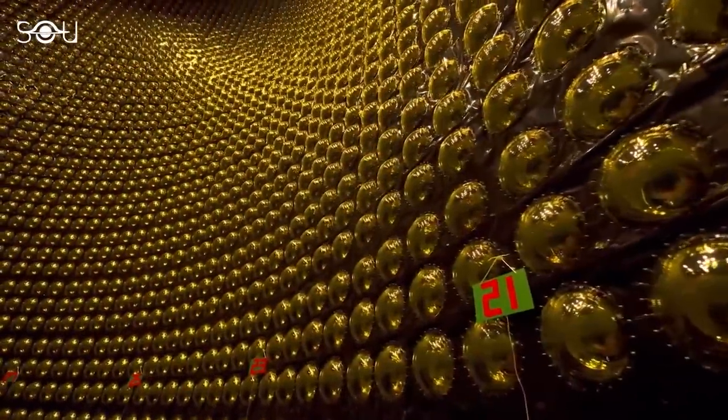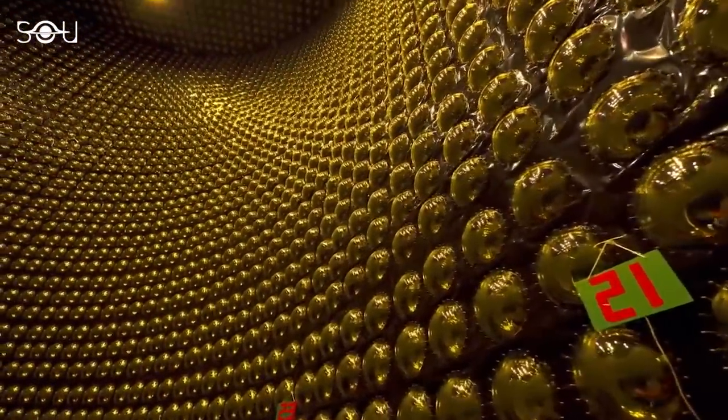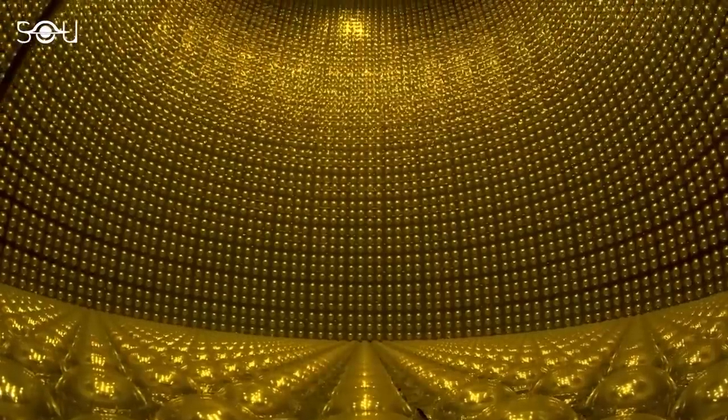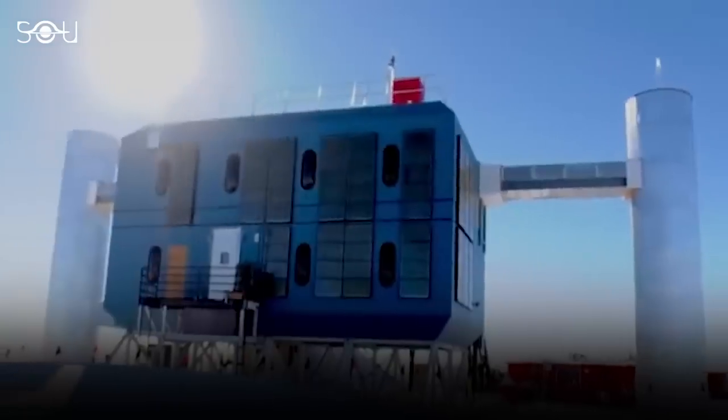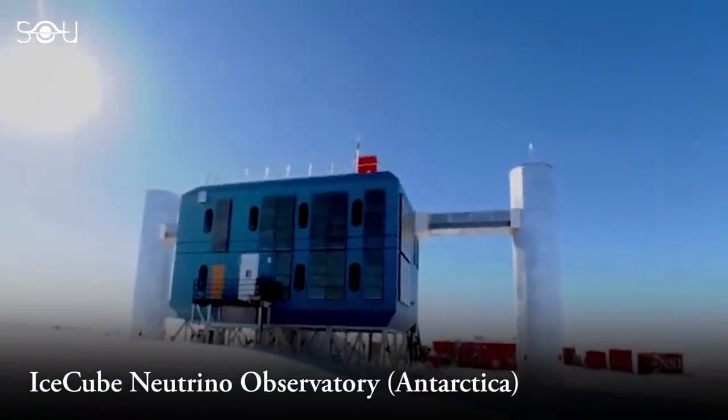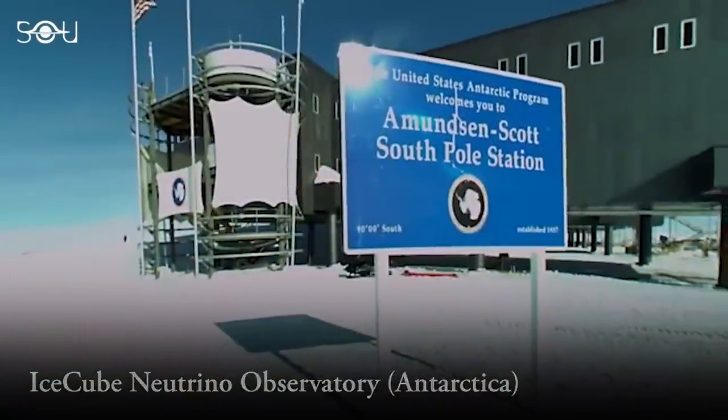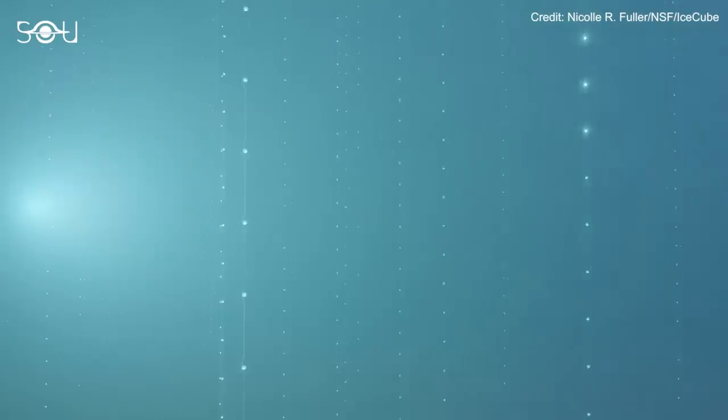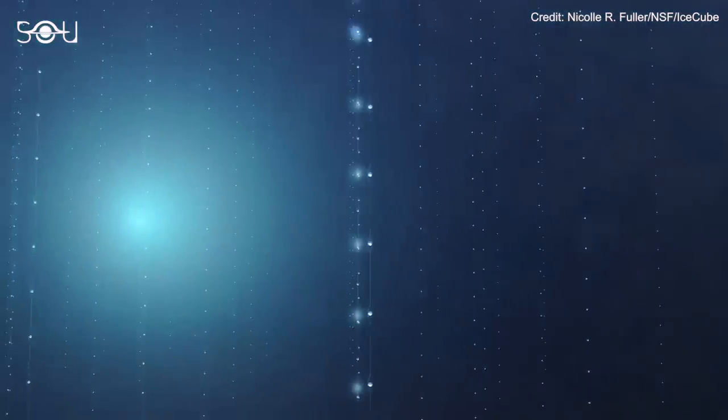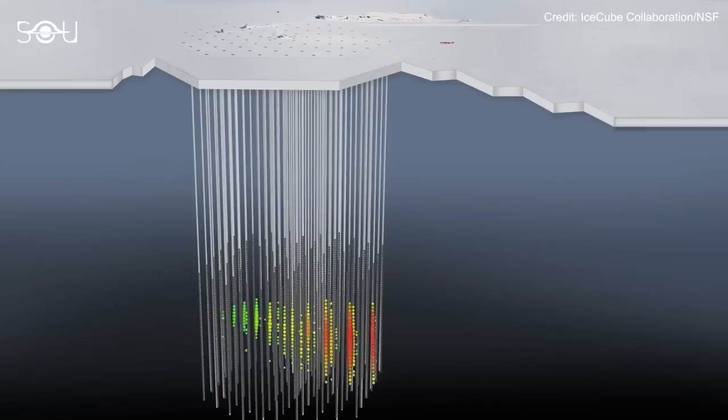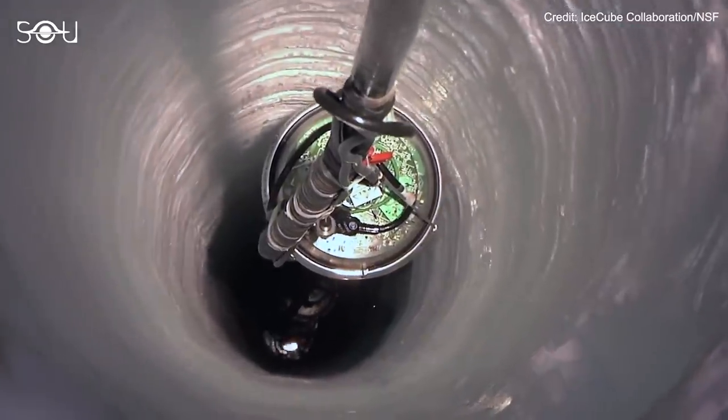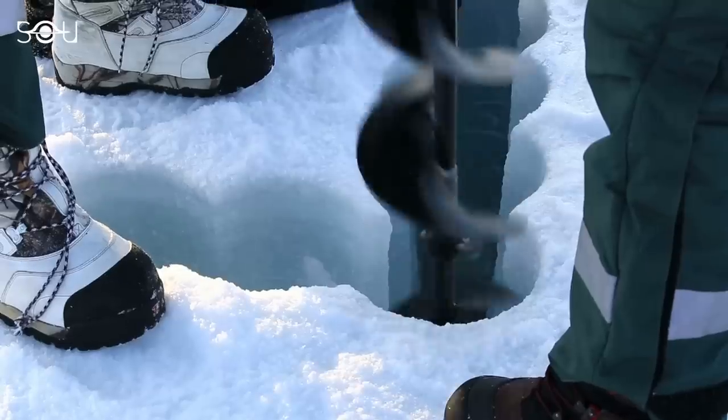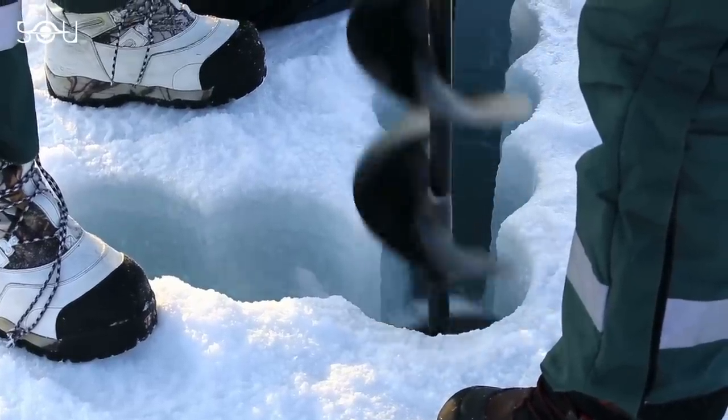The detection of high-energy neutrinos on Earth demands meticulous precision and significant patience. In this endeavor, facilities like IceCube play a crucial role. Situated at the Amundsen-Scott South Pole Station in Antarctica, IceCube stands as a colossal detector composed of 5,000 optical sensors suspended along 86 strings. These strings extend deep into Antarctic ice through holes drilled up to an impressive 1.56 miles or 2.5 kilometers.